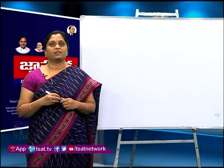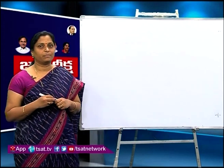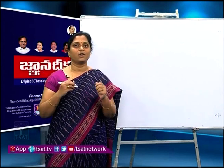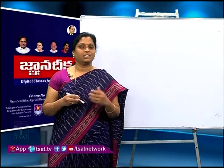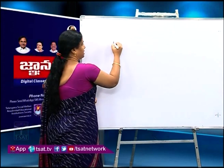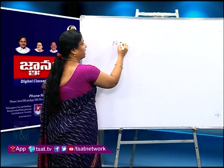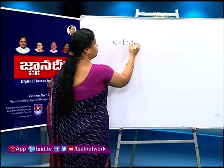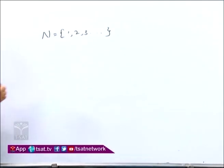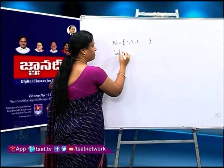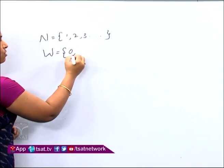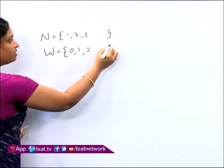Coming to our topic, can you imagine the world without numbers? We cannot imagine the world without numbers. This world is full of numbers, isn't it? In the previous classes, we learned about numbers. There are natural numbers, represented by N, and are 1, 2, 3 and so on. And next, whole numbers. Whole numbers are represented by W and start from 0, 1, 2 and so on.